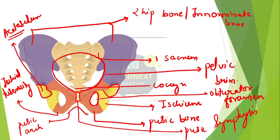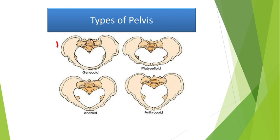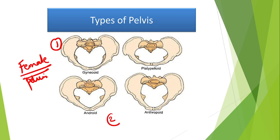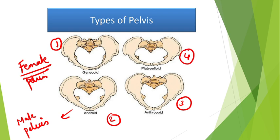Based on the shape of the pelvic brim, there are four types of pelvis. Number one is the gynecoid pelvis, also called the female pelvis. Second is the android pelvis, also called the male pelvis. Third is the anthropoid pelvis. Fourth is the platypelloid pelvis. Both anthropoid and platypelloid are called abnormal types of pelvis.